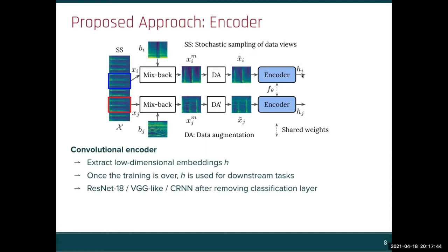As encoder, we compare different architectures including ResNet, VGG, and a convolutional recurrent net, all of them after we remove the final classification layer.